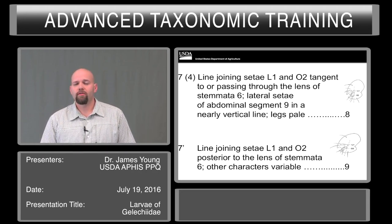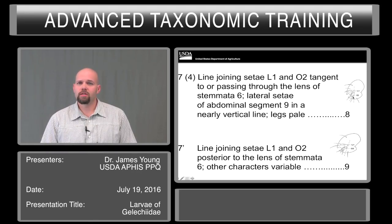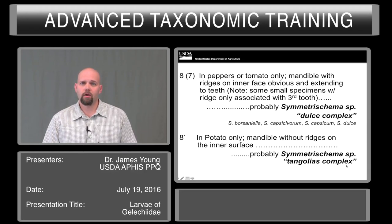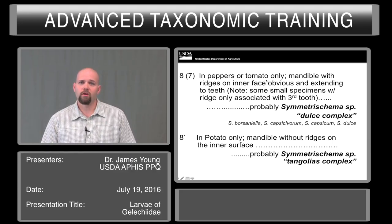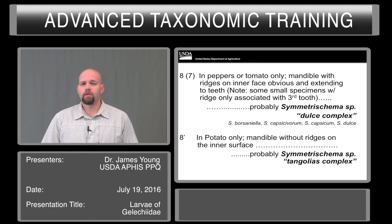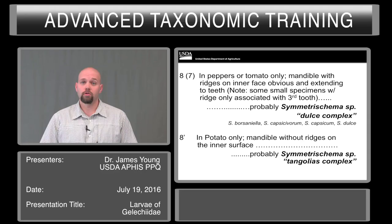If you go to couplet 7, you'll be looking at the head. Draw a line between L1 and O2. If that line goes through the stemmata, you'll be going to couplet 8. If it passes behind the stemmata, you'll be going to couplet 9. In peppers or tomatoes, the mandible should have ridges on the inner face that are obvious and extending to the teeth — these would indicate specimens of the Symmetrischema diluceae group.